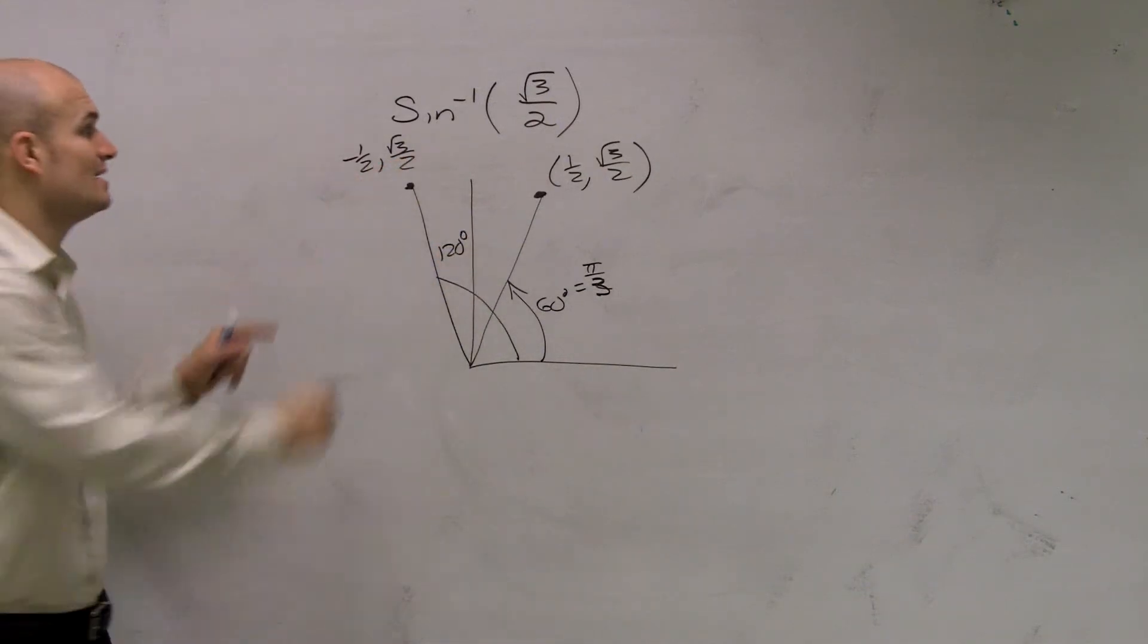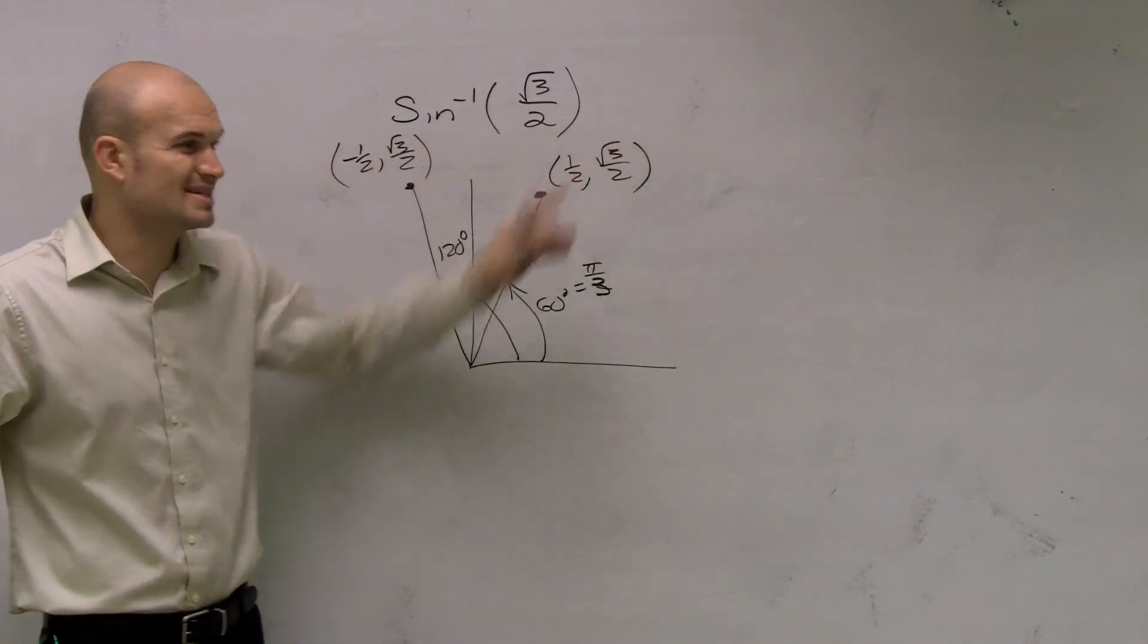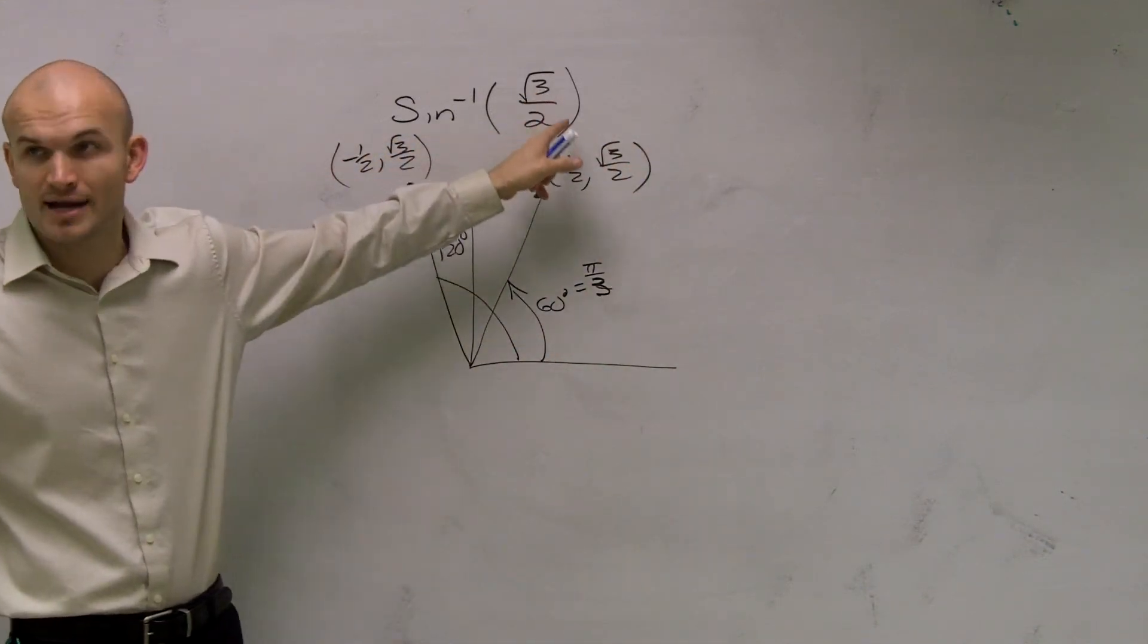There's two times when you have a sine that your sine value, your y value, is radical 3 over 2. Because the negative ones don't count, because that's not negative, right?